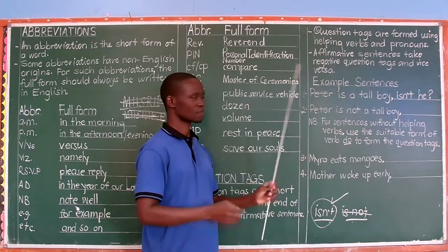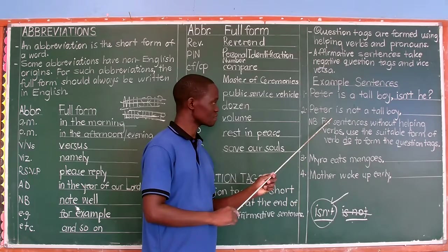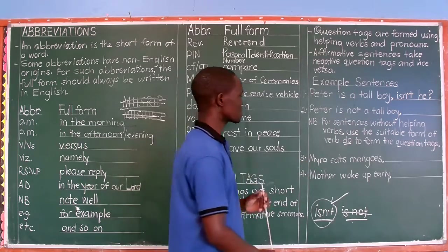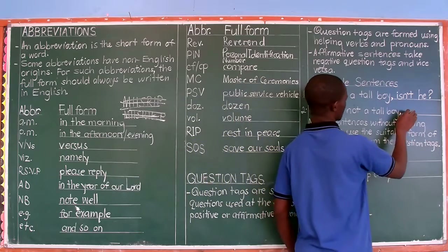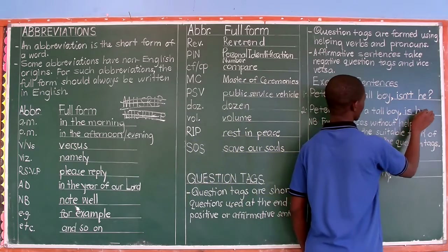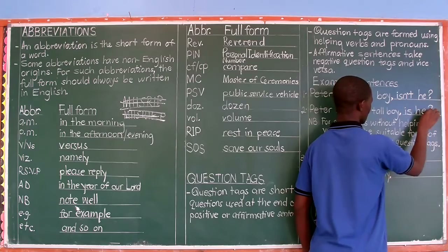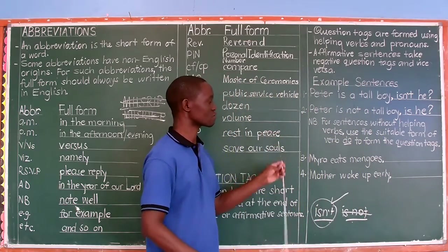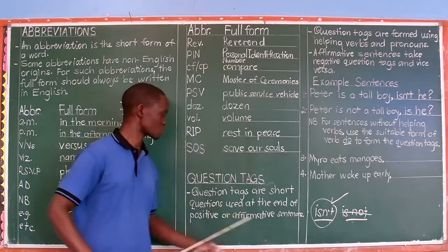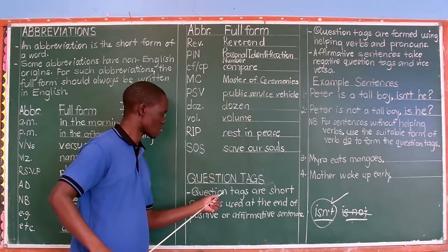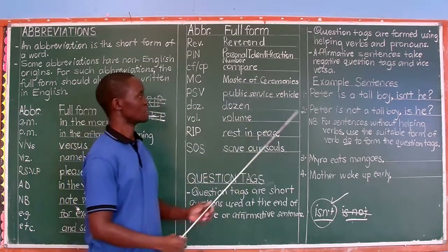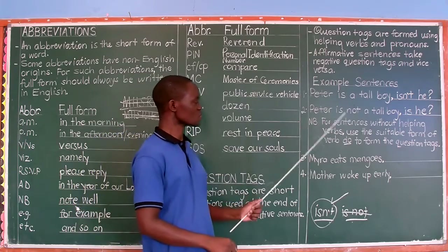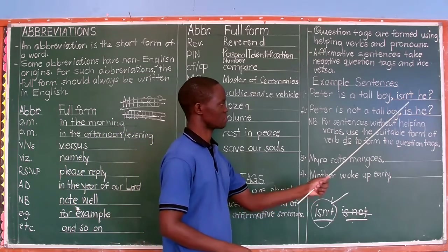The other way around: the sentence is negative — 'Peter is not a tall boy' — which question tag do you use? It is 'is he'. Remember to put a question mark because it is a short question. So: 'Peter is not a tall boy, is he?'